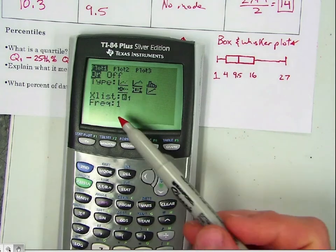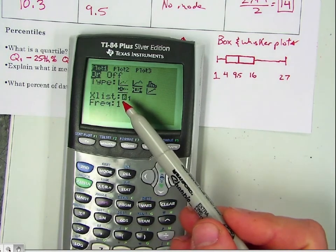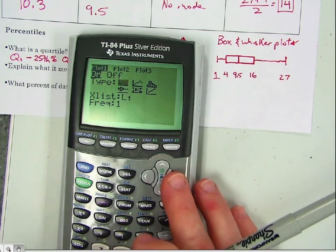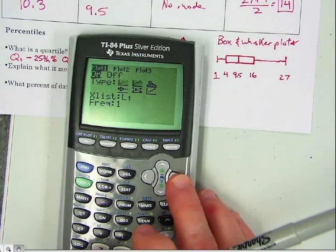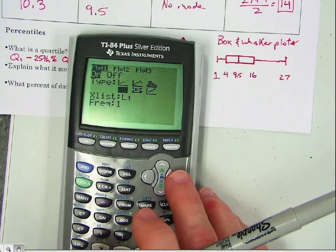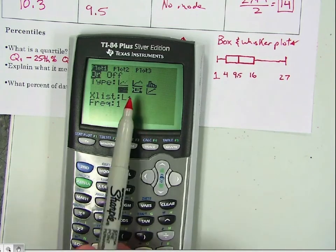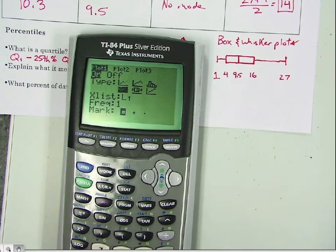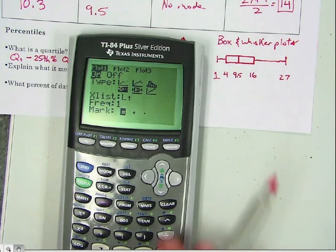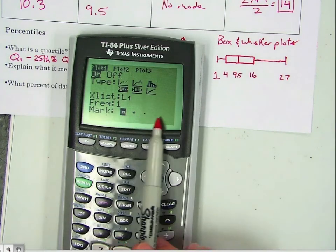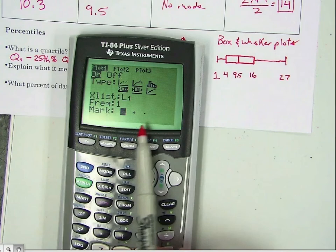So now, if you push down, notice what it does, it jumps down to your different list. So push back up, we want to go to the right, until we get to the scatter plot, or the box and whisker. Down here for mark, you can just change what you want the marks to look like, it doesn't really do anything.